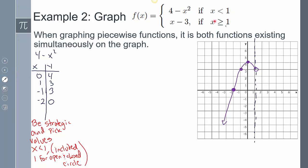Now I have to include this piece where x is greater than or equal to 1. So graphing that one, x minus 3, I have to remember the domain, x is greater than or equal to 1. So pick values that are 1 and greater than that: 1, 2, 3, and 4.